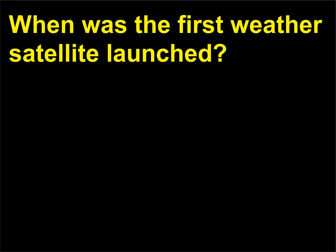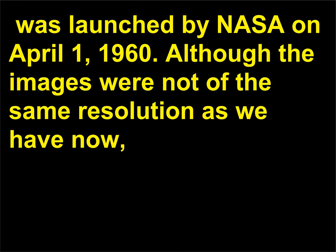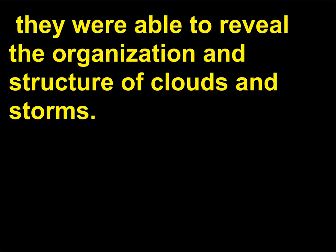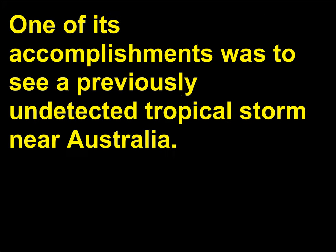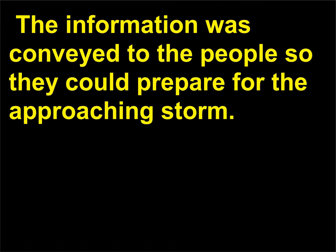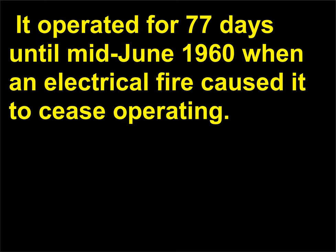When was the first weather satellite launched? The first weather satellite, the Television and Infrared Observation Satellite, TIROS I, was launched by NASA on April 1, 1960. Although the images were not of the same resolution as we have now, they were able to reveal the organization and structure of clouds and storms. One of its accomplishments was to detect a previously undetected tropical storm near Australia; the information was conveyed to the people so they could prepare. It operated for 77 days until mid-June 1960, when an electrical fire caused it to cease operating.